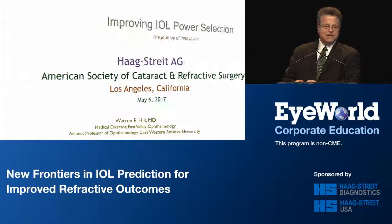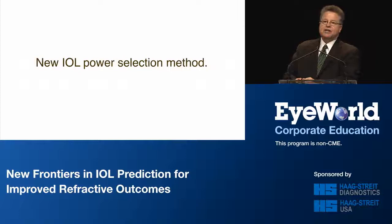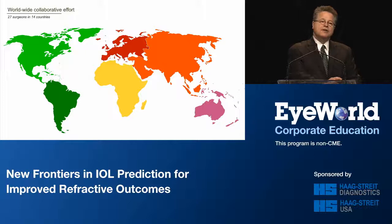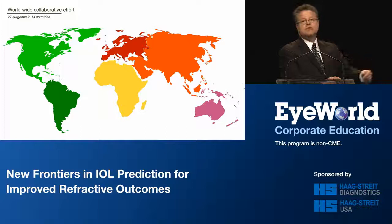This is a brand-new method for doing IOL power calculations. It doesn't use vergence formulas — it's coming at the problem from a completely different point of view, and as such, it's not encumbered by some of the problems we've had in the past. Most importantly, this is a worldwide collaborative effort — not the work of one person — a joint project with Haag-Streit over the last seven years.